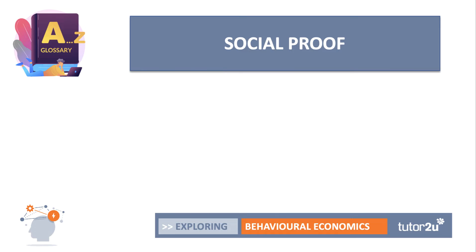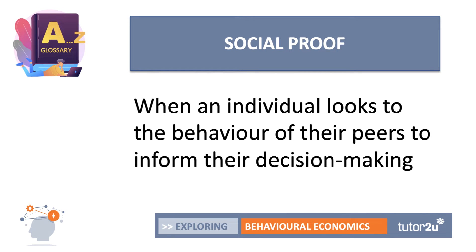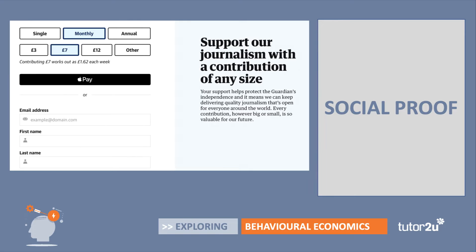Social proof is quite interesting. Social proof is the idea that an individual looks to the behaviour of their peers to inform their decision-making, or to the behaviour and views of people that you already support. So you're looking for social proof, perhaps a bit of confirmation bias as well. A good example is an advert from The Guardian.